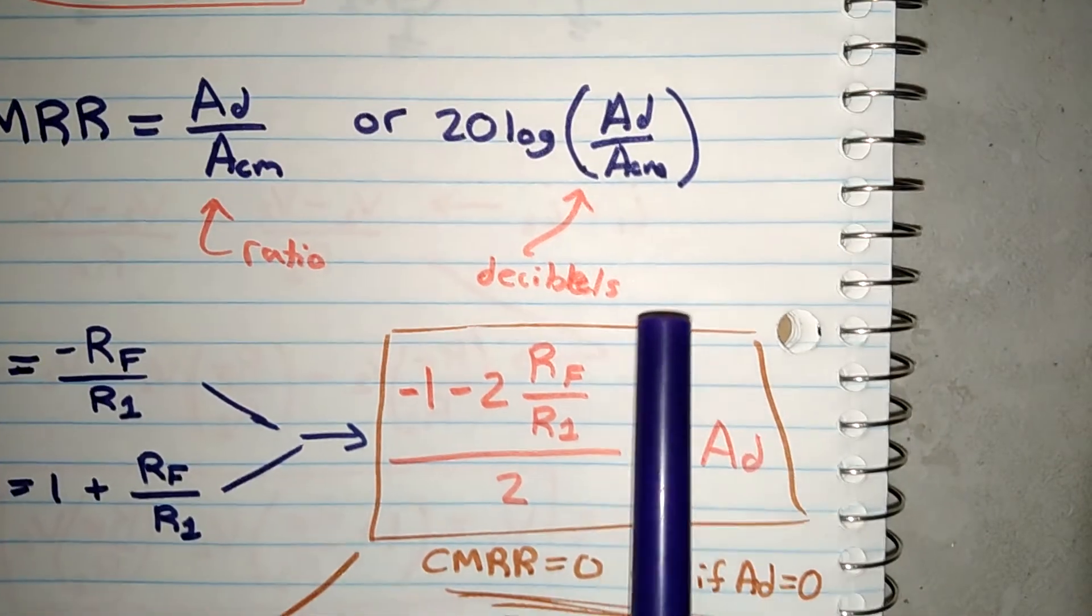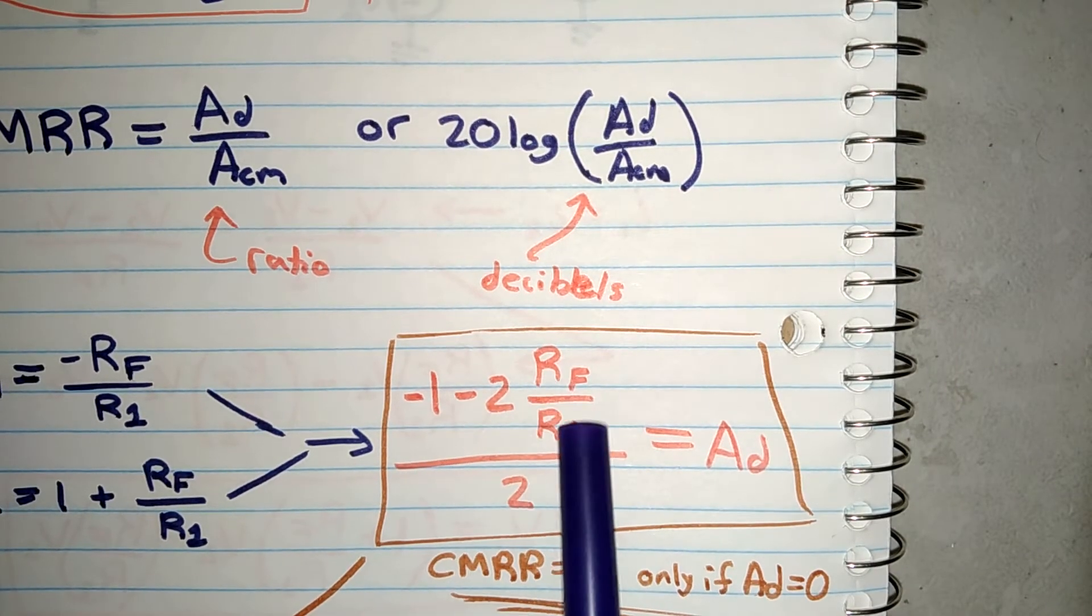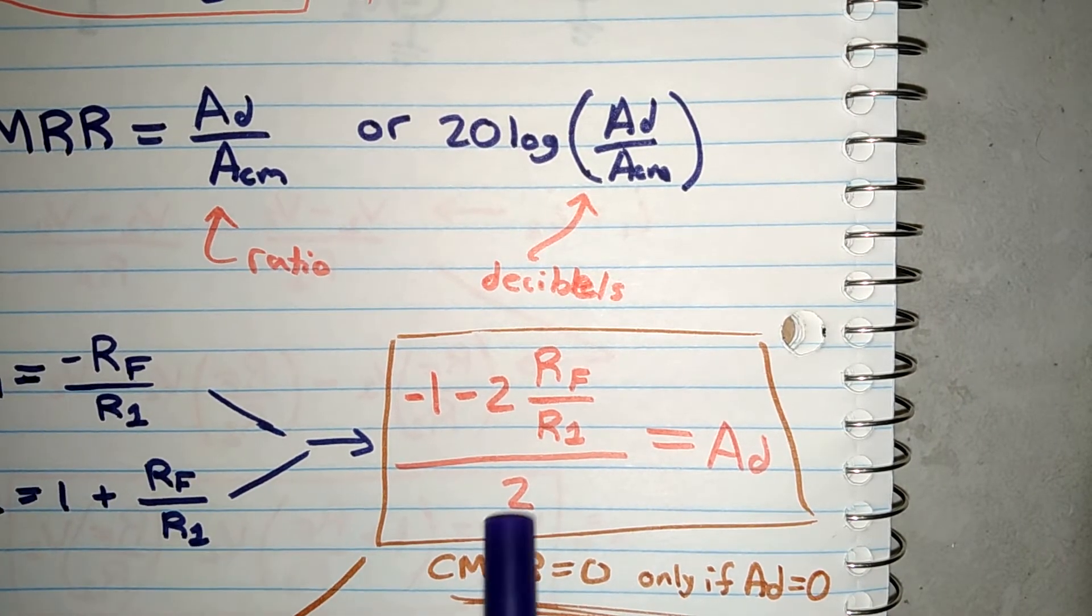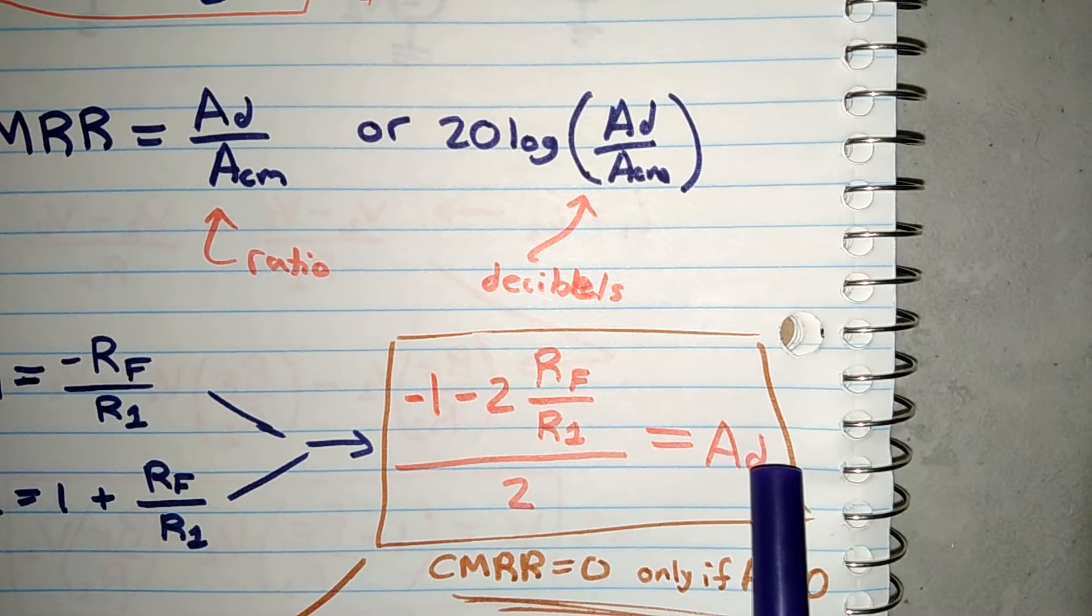The differential gain here is going to be A1 minus A2 divided by 2. Then I can do the math here. I get negative 1 minus 2 RF over R1, because they have a common mode RF, over 2 is going to be equal to the differential gain.